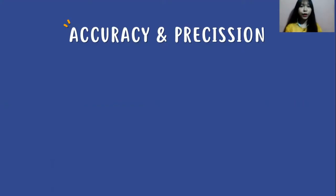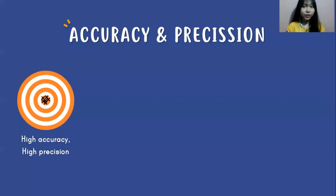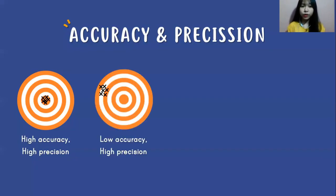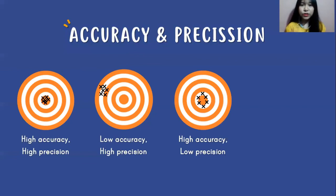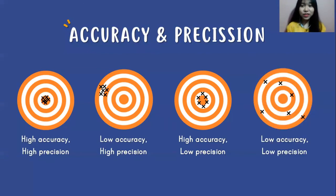Precision is the closeness of measurements to each other — every time you do the measurement, your data will be similar. Your data should ideally have both high accuracy and high precision. Here's how different combinations look using a dartboard analogy: high accuracy and high precision means the arrows are close to each other and centered on the target. Low accuracy and high precision means the arrows are close together but away from the center. High accuracy but low precision means the arrows are near the center but scattered. And low accuracy and low precision means the arrows are neither close to the center nor close to each other.